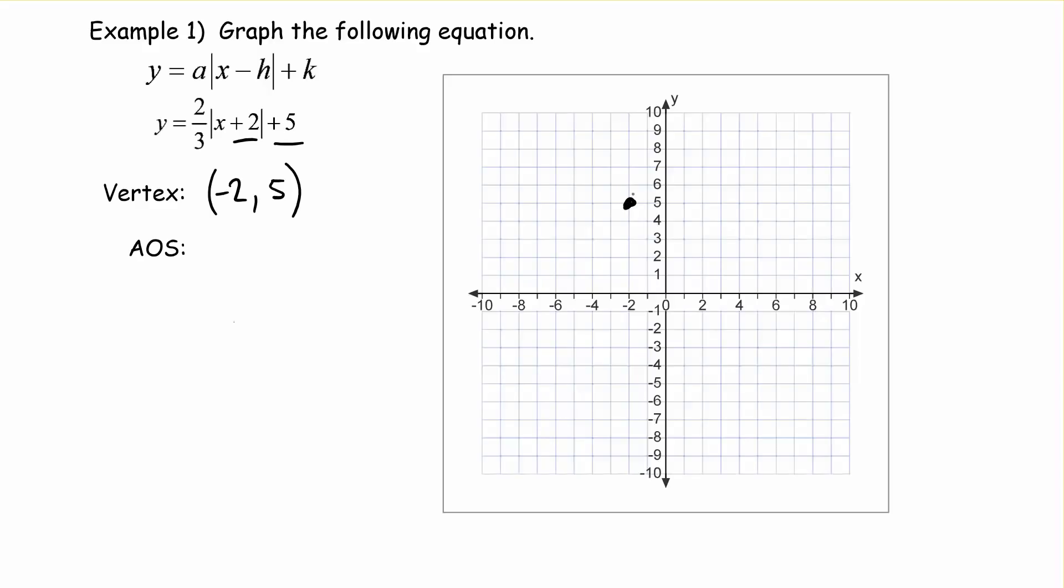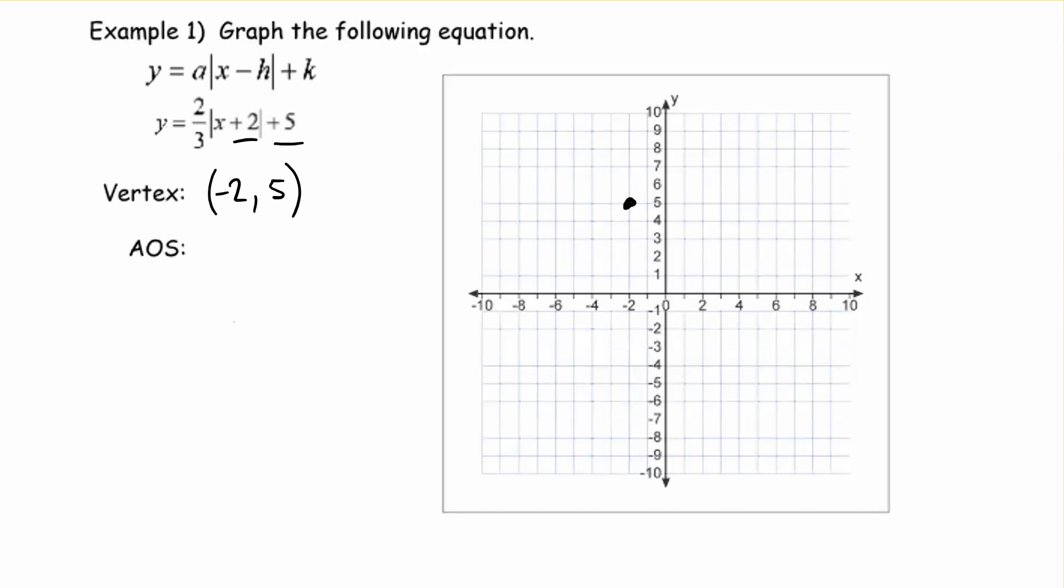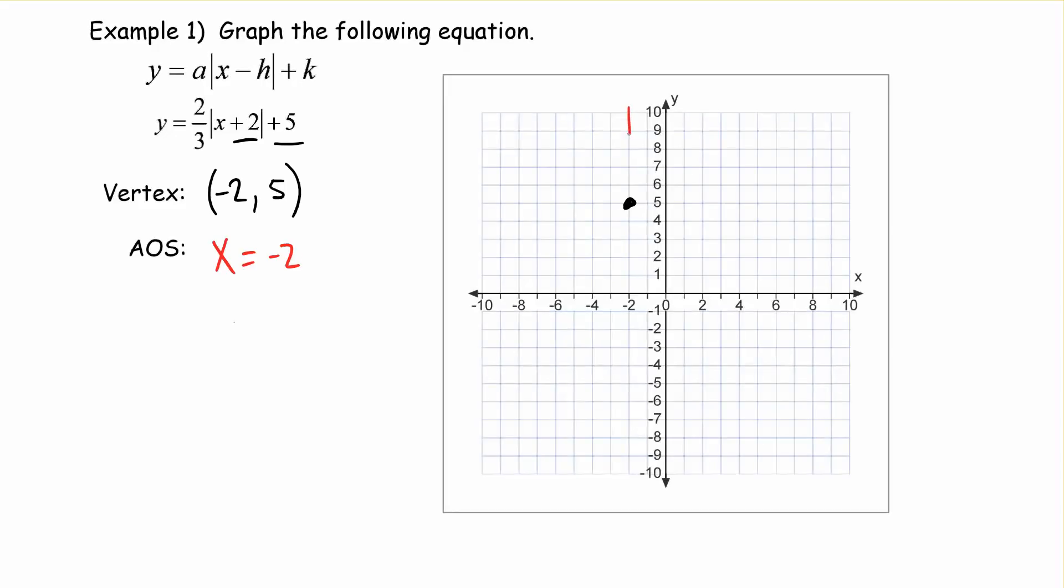And that means that we have an axis of symmetry that's the equation x equals whatever our x value is. So that's negative 2. So we can draw in our axis of symmetry. And that just means it's going to cut our graph right down the middle and make our graph symmetrical on both sides. So it's going to look the same on both sides of the equation.